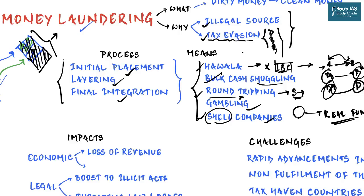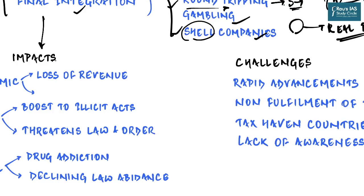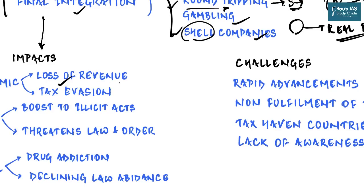Money laundering has proven to be a menace for society and the economy. Once illicitly earned money enters a financial system, it has the ability to destabilize the economic system and indirectly promote negative social and legal consequences such as tax evasion, which means loss of revenue to the government. Tax evasion and loss of revenue to the government are the primary economic impacts of money laundering.